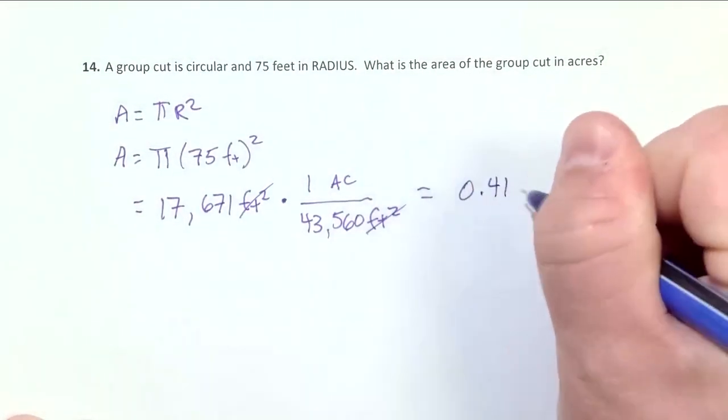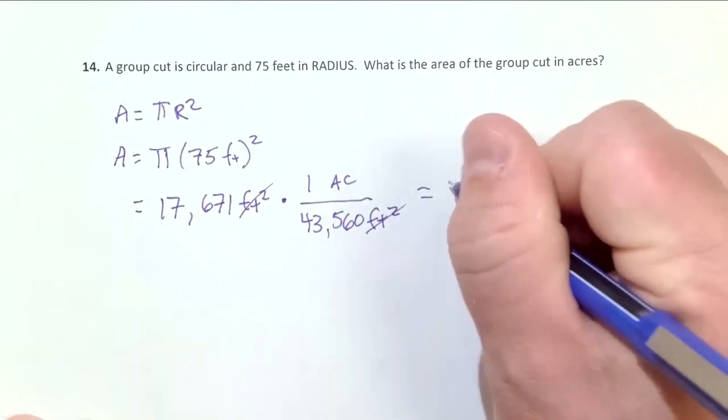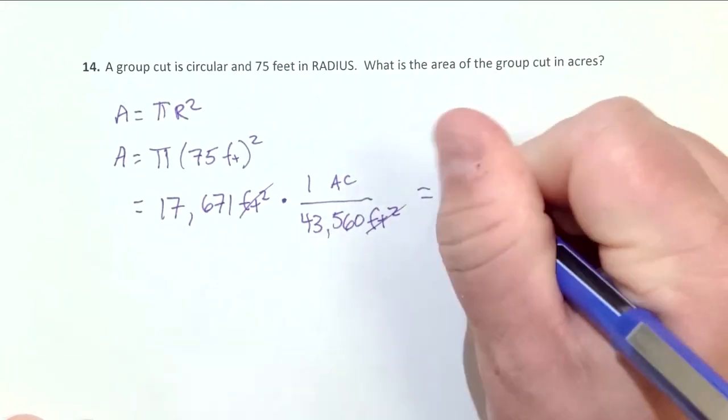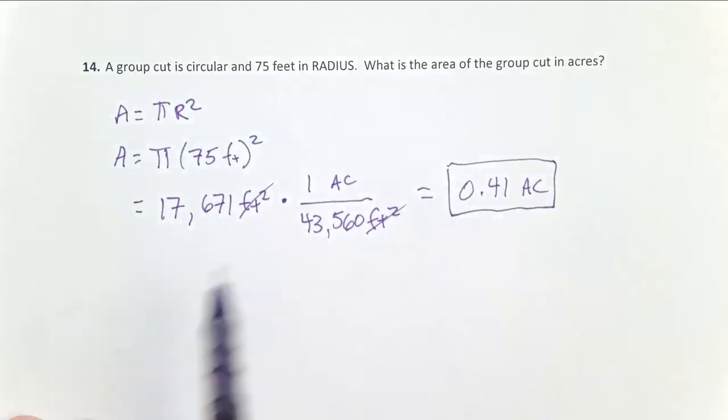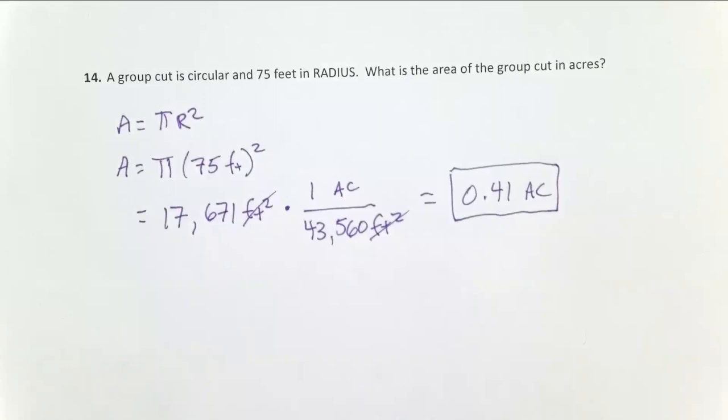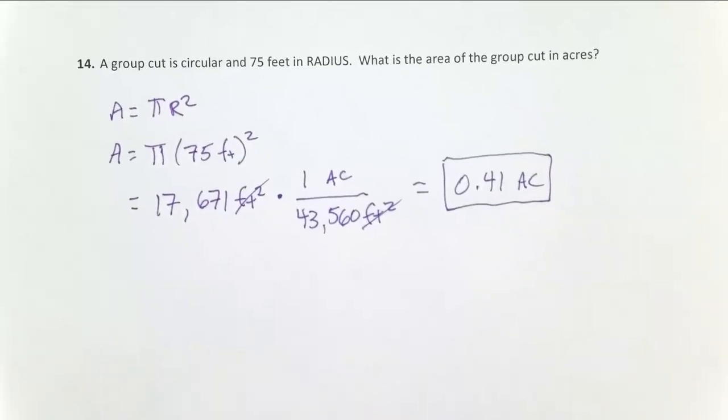0.41 acres. So I now know that this group opening with a radius of 75 feet is going to yield a 0.41 acre group. If I need to harvest 40 acres, for example, now I know I need about 100 of these openings. So that's a simple problem on area in group selection.